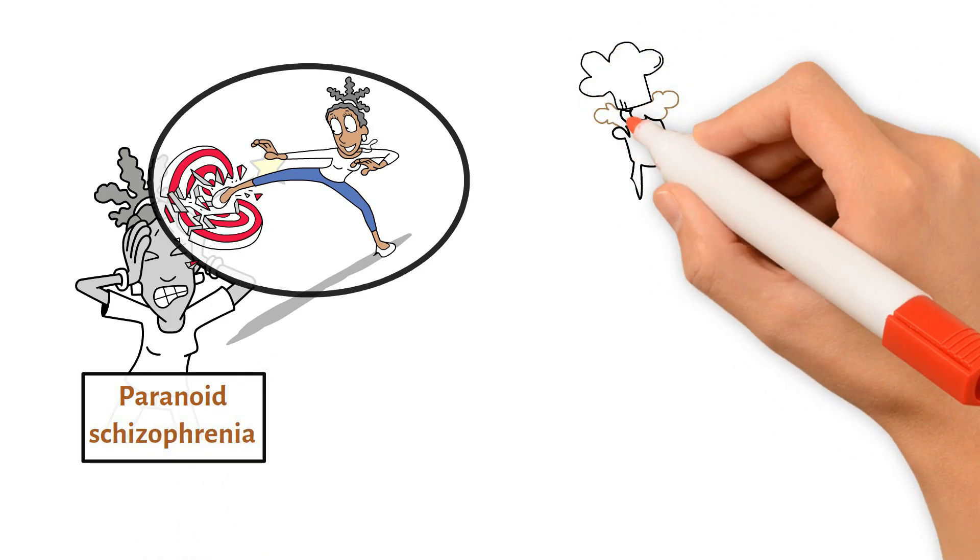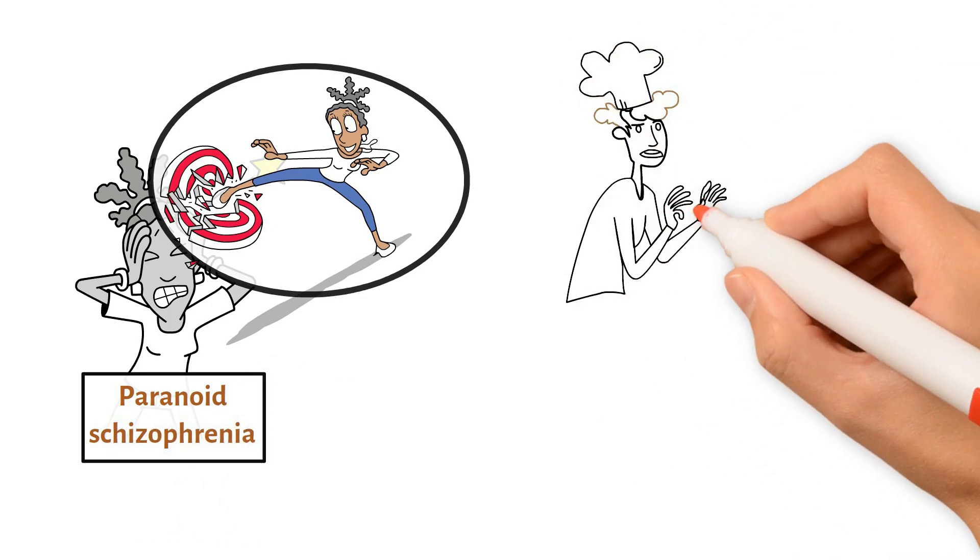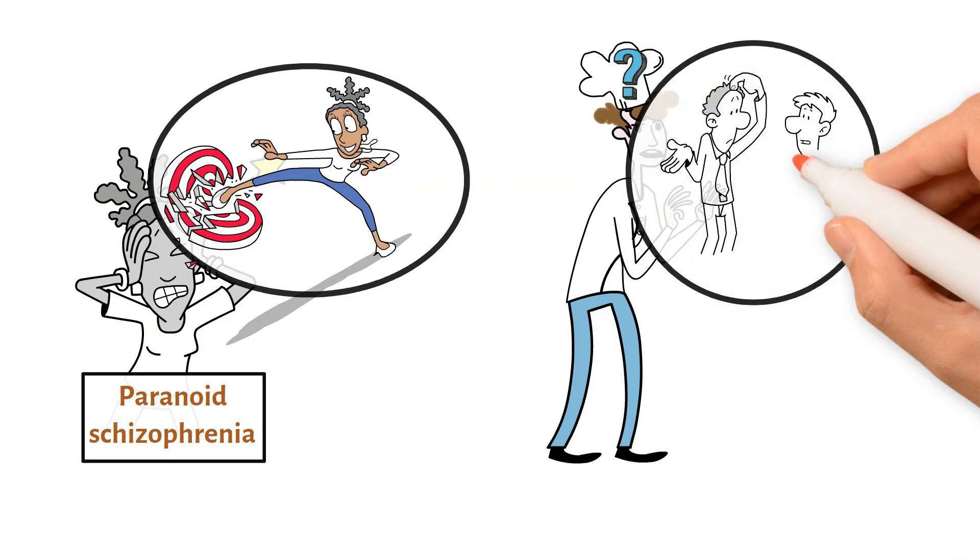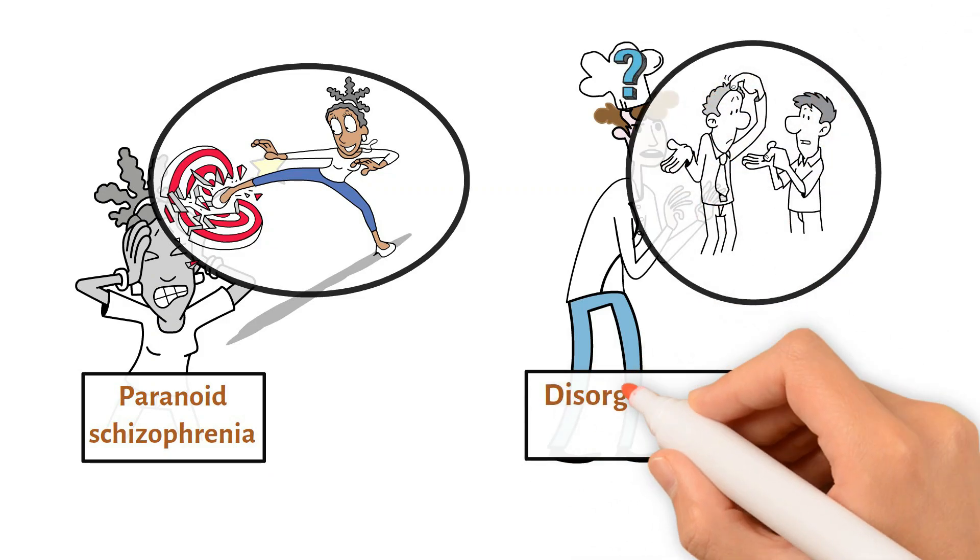Next, disorganized schizophrenia. This type can make it hard to think clearly and act normally. People might speak in a confusing way or struggle to complete daily activities.